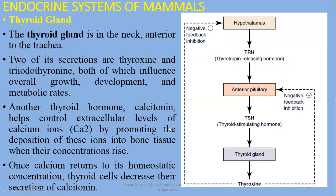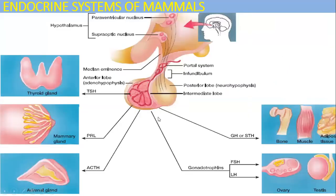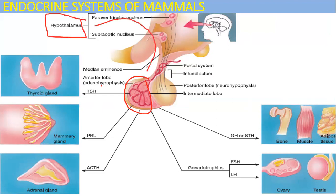Next we will discuss the thyroid gland. Thyroid gland, adrenal gland, and gonads are all under the control of the pituitary gland — specifically the hormones of the anterior pituitary, which we discussed last time. The anterior pituitary is ultimately controlled by the secretions of the hypothalamus, which regulate the anterior pituitary through different releasing hormones.